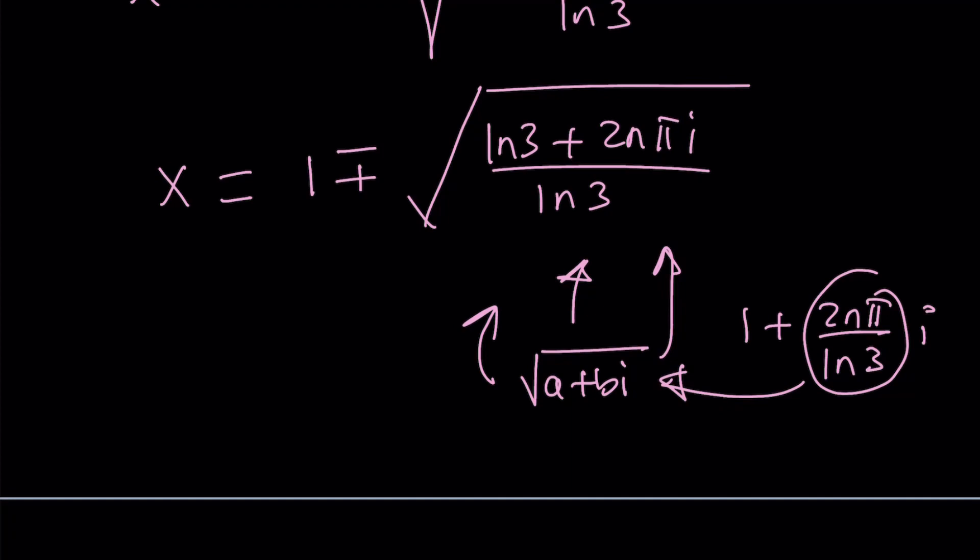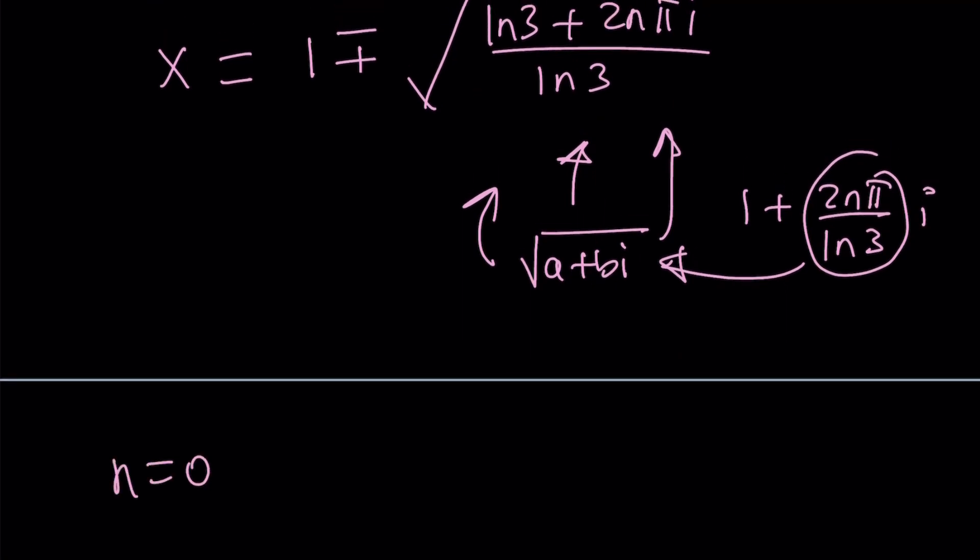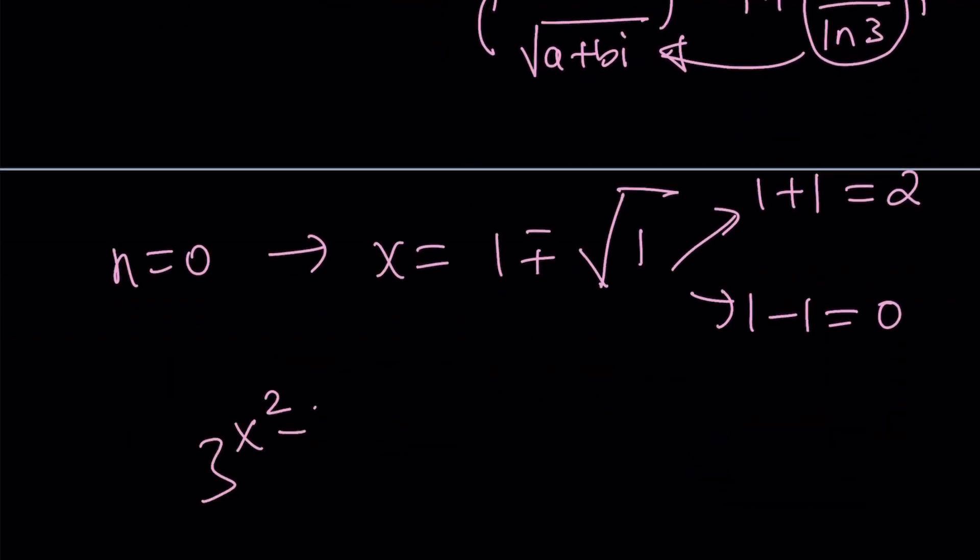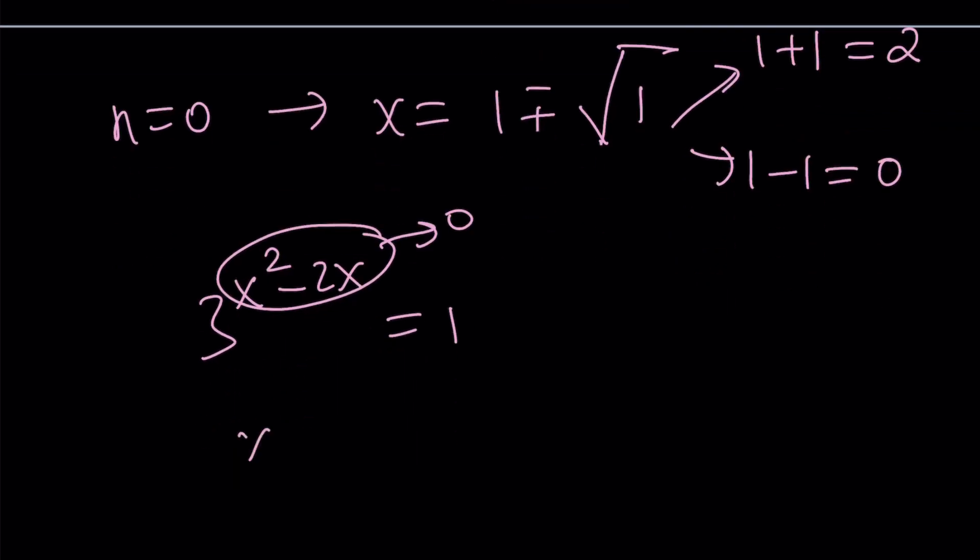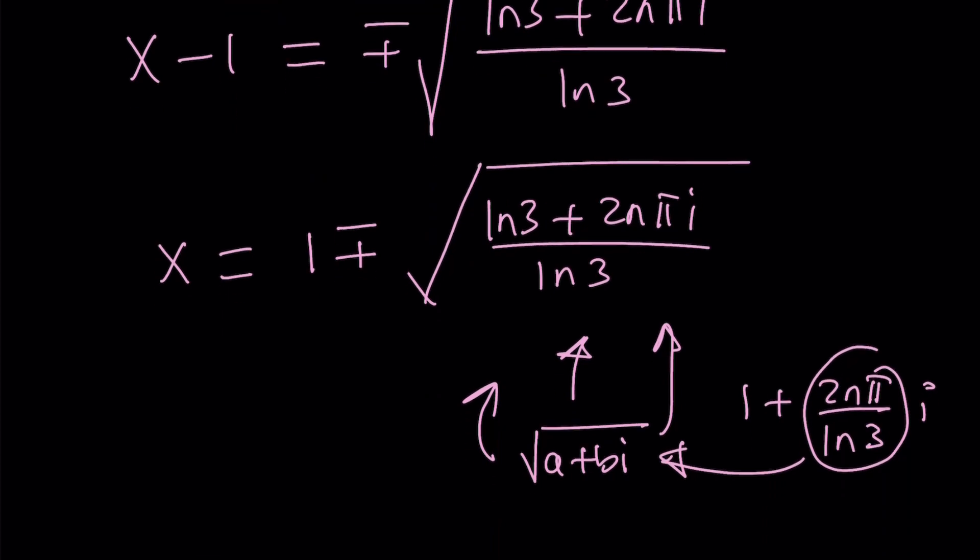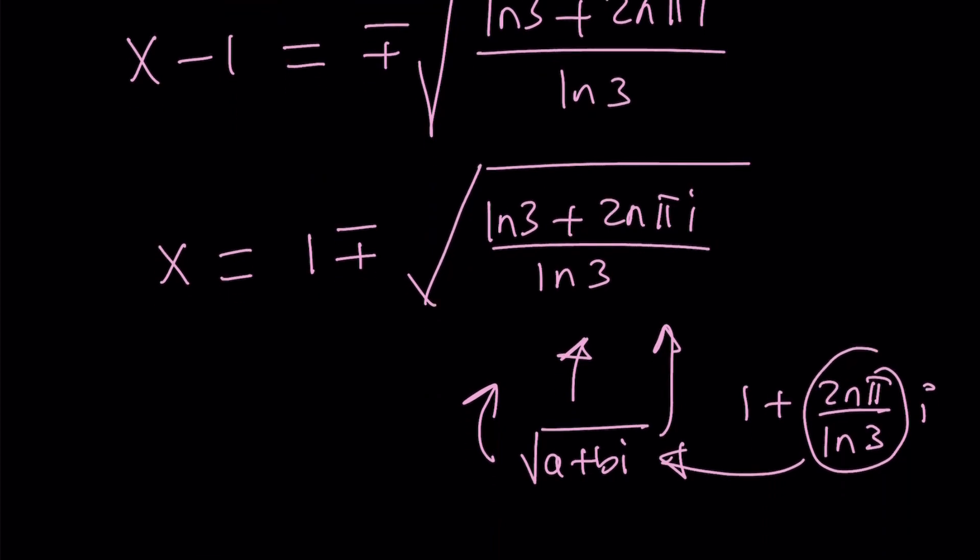We're going to be looking at some special cases. What happens, for example, if n is equal to 0? If n is 0, then you get x equals 1 plus minus the square root of ln3 over ln3, which is 1. And then from here, we get two solutions, 1 plus 1 and 1 minus 1. 1 plus 1 is 2. 1 minus 1 is 0. And those are going to be the only real solutions. Because if you set this equal to 0 directly, that's what you would be getting. We could have found the results like this, but this is more fun because it gives you all the solutions.